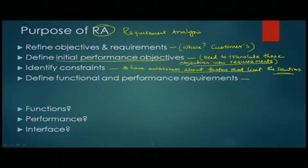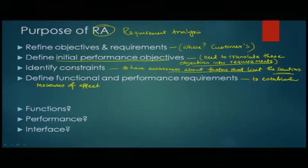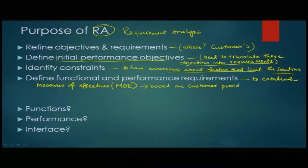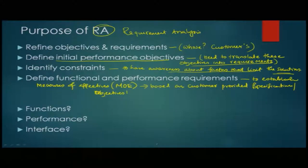The fourth purpose is to define functional and performance requirements — to establish Measures of Effectiveness, or MOEs, based on customer-provided specifications or objectives. So the functional and performance requirements can be quantified or verified. These four things broadly cover the purpose of requirement analysis.